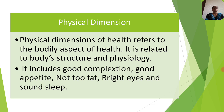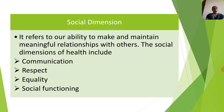Coming to Physical Dimension — Physical Dimensions of Health refers to the bodily aspects of health. It is related to body structure and physiology. It includes good complexion, good appetite, not too fat, bright eyes and sound sleep. Social Dimension refers to our ability to make and maintain meaningful relationships with others. The Social Dimensions of Health include communication, respect, equality and social function.